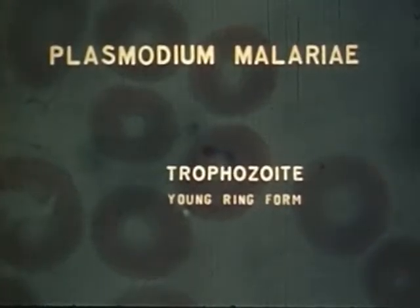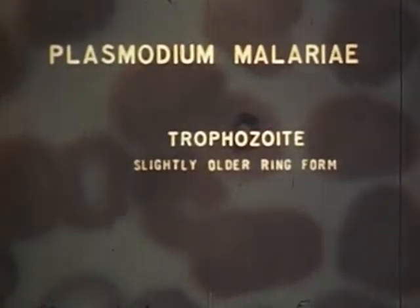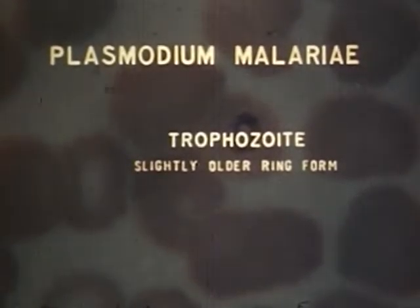The young ring forms of malariae closely resemble those of other species. The young trophozoite of malariae usually lacks the marked irregularity of vivax and is more compact.